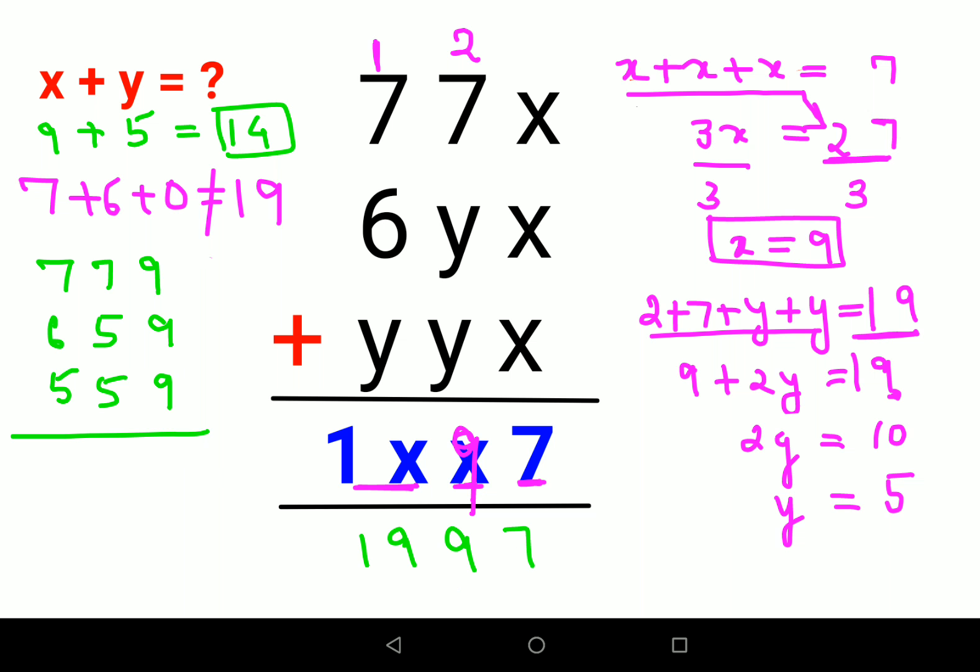9 plus 9 plus 9 gets you 27, 2 gets carried. 2 plus 7 gets you 9, plus 5 plus 5 gets you 19, and 1 gets carried. 1 plus 7 gets you 8, plus 6 gets you 14, 14 plus 5 gets you 19. That is the value once you substitute the value of x in your final answer.